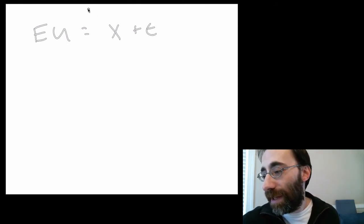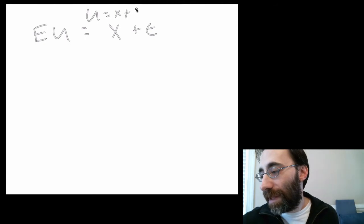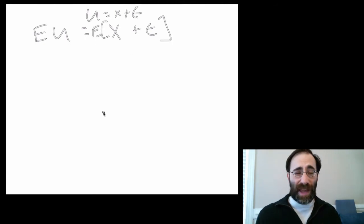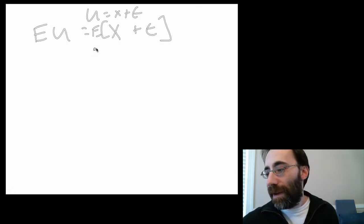So the expected utility would be, if utility is x plus epsilon, this is the expectation of this, and we'll get to what that means in the next part of the class, which is going to be x plus a half.